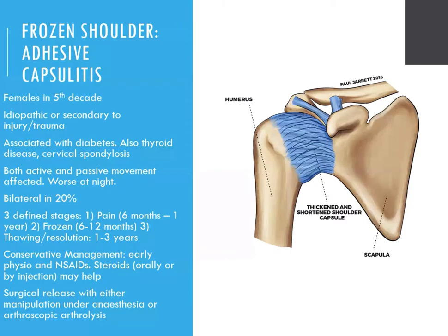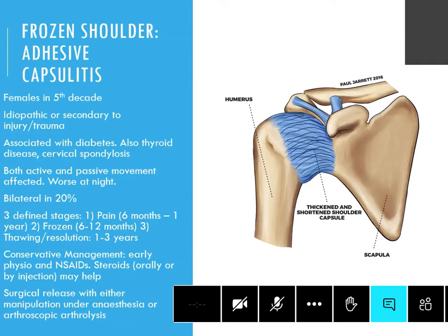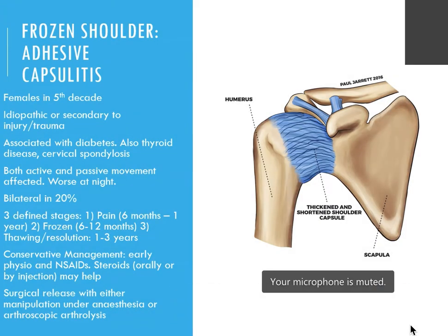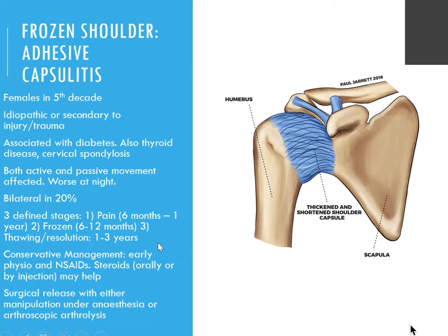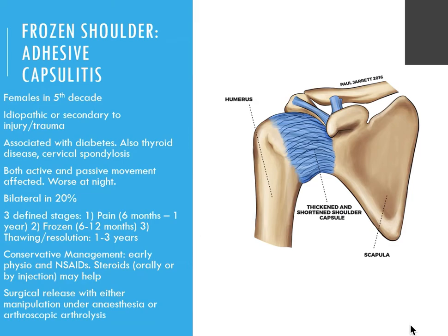Frozen shoulder, or adhesive capsulitis, is when you get that thickening of the shoulder capsule — as the diagram shows — that can make specific movement really difficult. They'll give you hints with the person described in their vignette: it will be a woman who is 50 or 60 years old. Know the defined stages and the time periods for each one, because a question might ask what comes next for a patient if the pain has lessened but she can't move it as well.